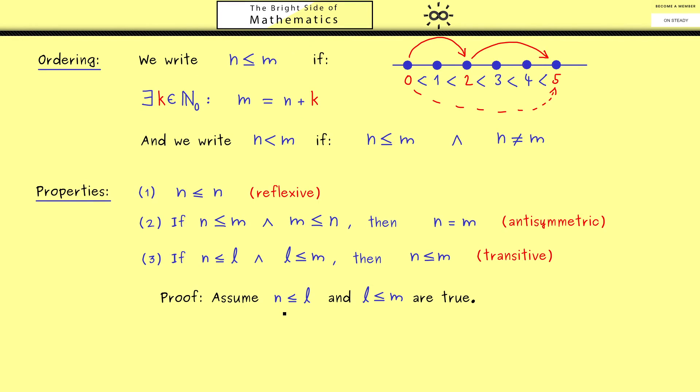Therefore let's assume that for three natural numbers n, l and m these two statements here are true. More concretely this means that these two statements are true. Which means we find a k₁ such that this equality holds and we find a k₂ such that this equality holds.